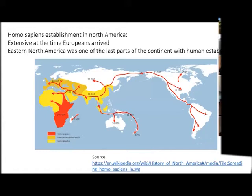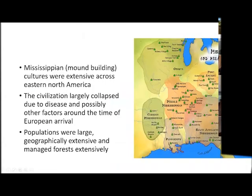Kind of interesting. This is a general map from Wikipedia noting that especially far in the north, those were the most recent establishment of people. And that's important because when people arrive, they're going to start doing stuff. One of those things is the establishment of extensive cultures. You may know the Olmec cultures, the Mayan cultures, those civilizations, even the later descendants such as the Aztecs.